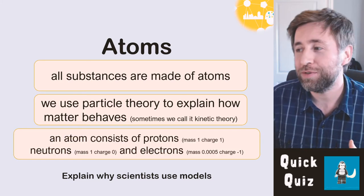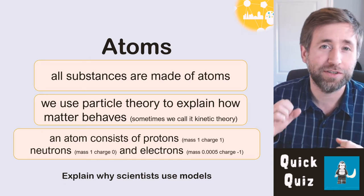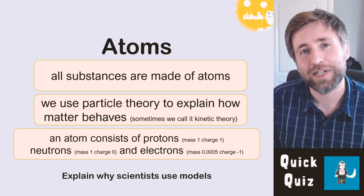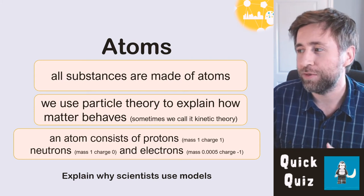An atom consists of protons with mass 1 and charge +1, neutrons which have mass 1 and charge 0, and electrons which have charge -1 and a very small mass of 0.0005.